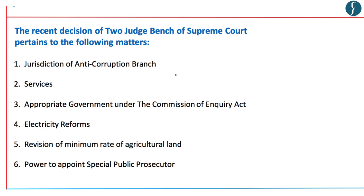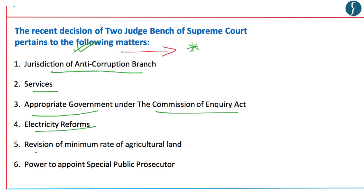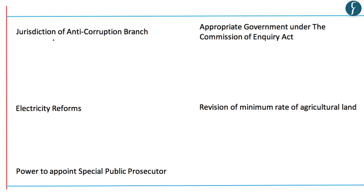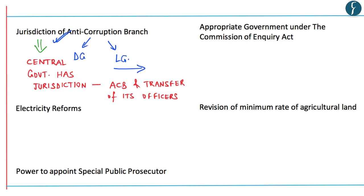After understanding the core issues under Article 239AA, this editorial also highlights the recent judgment of the division bench — two judges of the Supreme Court. The six issues pertained to: jurisdiction of the anti-corruption branch, services, appropriate government under the Commission of Inquiry Act, electricity reforms, revision of minimum rate of agricultural land, and power to appoint special public prosecutor. On the anti-corruption branch, the LG replaced the chief of ACB in 2015. The Supreme Court held that jurisdiction over the ACB lies with the central government, which also has authority to transfer its officers.